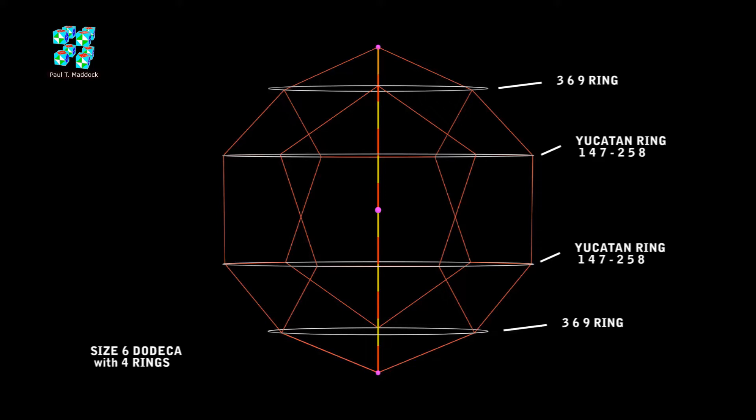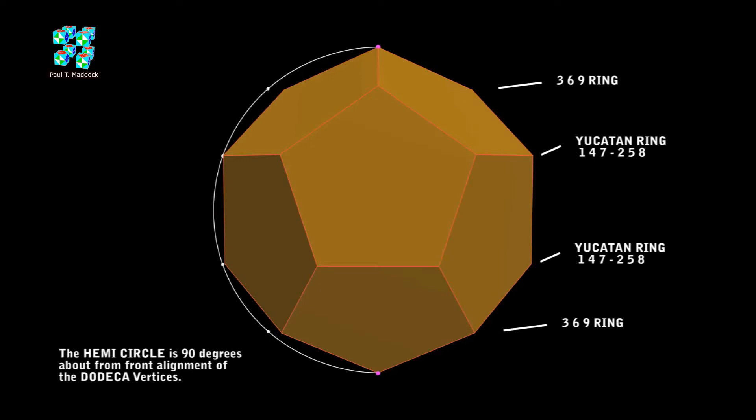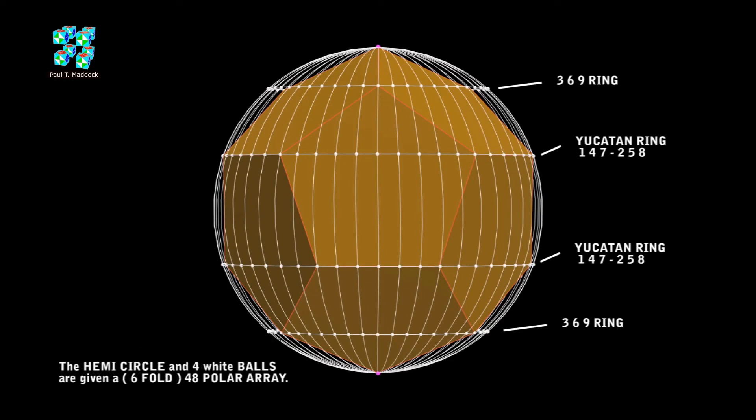Our next step is just look at them rings and form a hemicircle. Now we can give it four white spheres on the intersections between the four rings. Now we're ready for an array. I decided to give this a six-fold array. So six times eight is 48. Look at the results. The three-dimensional vertices of the dodeca are all lining up to the little white balls of the quad-step phyllotaxis.